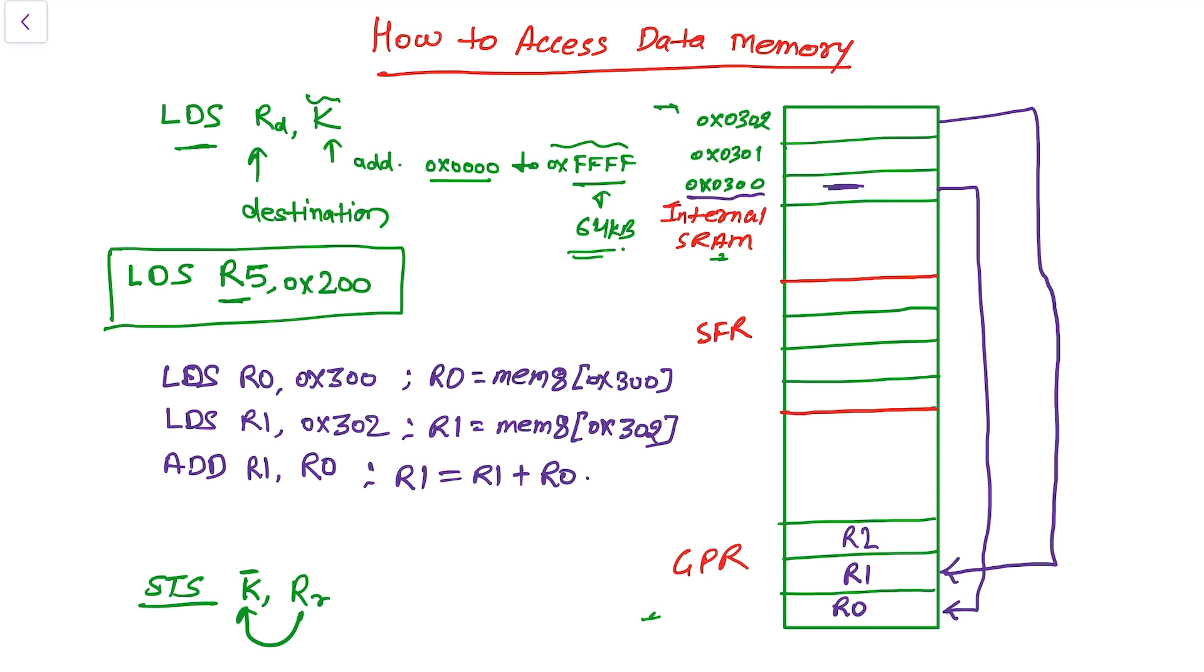That means store the content of this register Rr into the address pointed by K. So in STS instruction, it tells CPU to store the content of the GPR to an address location in the data memory space. After this instruction is executed, the location in the data space will have the same value as this general purpose register has. The location can be in any part of the data memory space as we had seen in LDS instruction: it can be one of the input/output registers, a location of SRAM, or GPR.